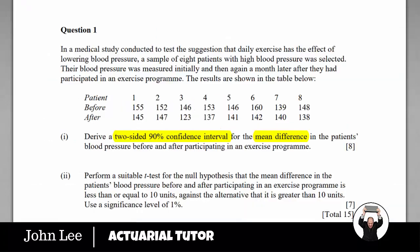Now let's take a look at part two. Here we want to perform a t-test that the mean difference in the patient's blood pressure before and after participating in the exercise program is less than or equal to 10 units, against an alternative that it is greater than 10 units.